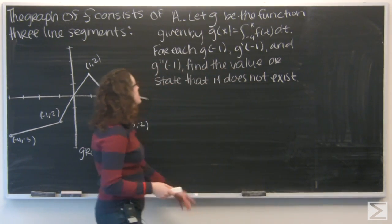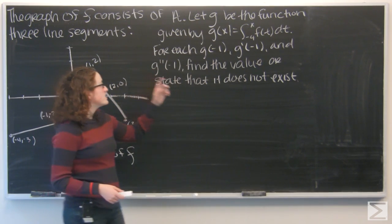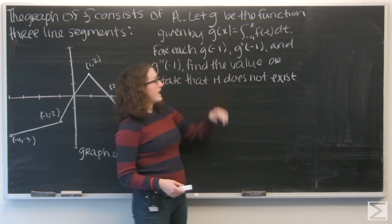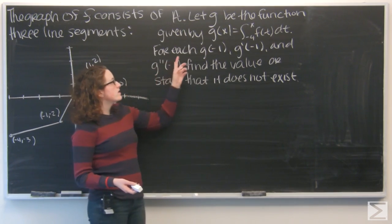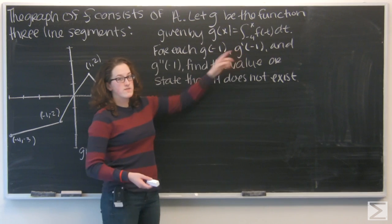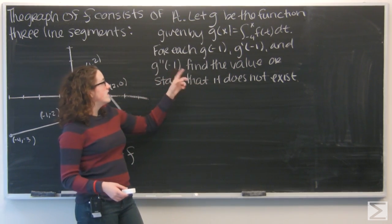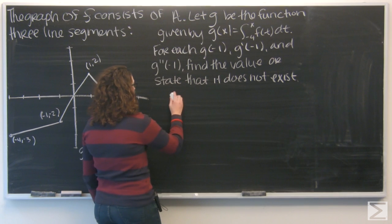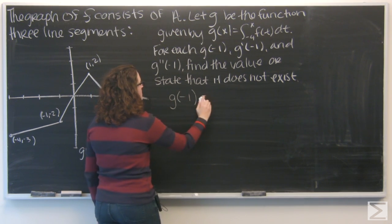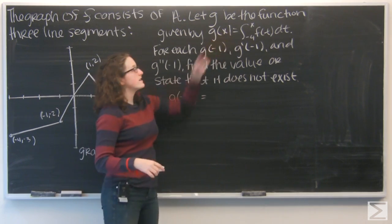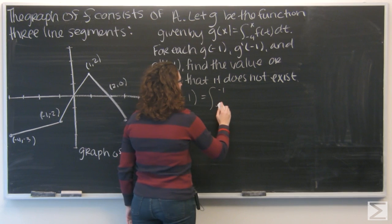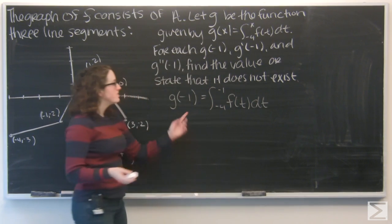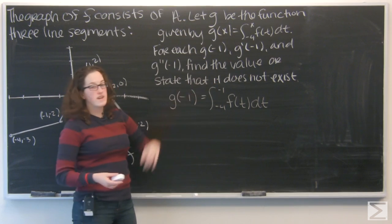Now let's take a look at part a. We're going to let g be the function given by g of x equals the integral of f of t from negative four to x. For g of negative one, g prime of negative one, and g double prime of negative one, we want to find the value or state that it doesn't exist. So let's start with g of negative one — I'll plug negative one into that integral.